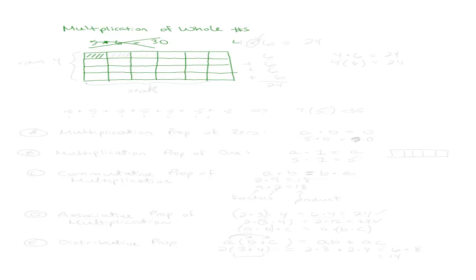I'm going to change this to 4 times 6. Everyone knows this is 24. Just because my picture turned out to be 4 by 6 instead of 5 by 6, that doesn't really matter. One way to look at it is: say this is rows of tables — this is how many rows you have, and this is how many seats you have per row.